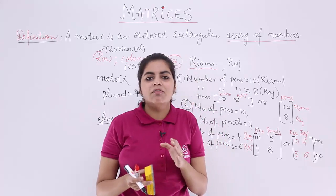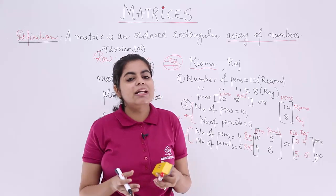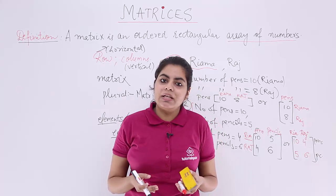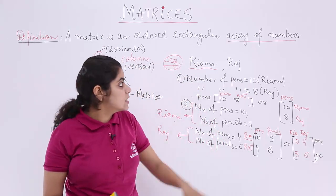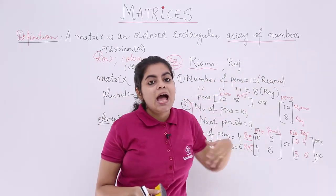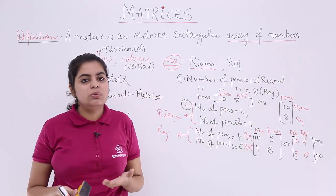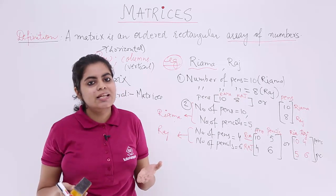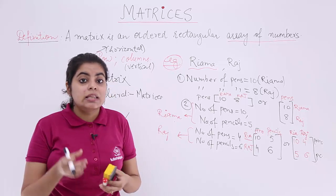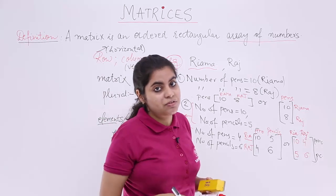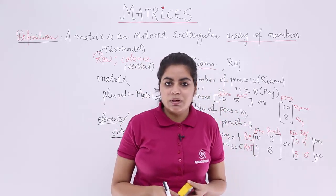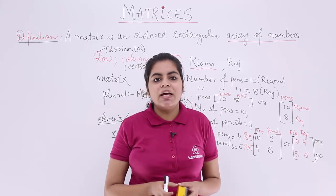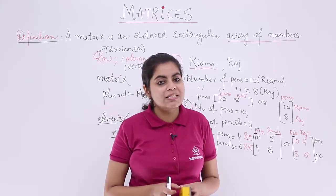So in this video, we have studied what a matrix is — an arrangement of different elements or entries in an array of numbers. Matrices can be represented in various forms using columns or rows. Rows are horizontal, columns are vertical. In the next video, we'll see the basic terminology of matrices — specifically what is meant by the order of a matrix in detail.